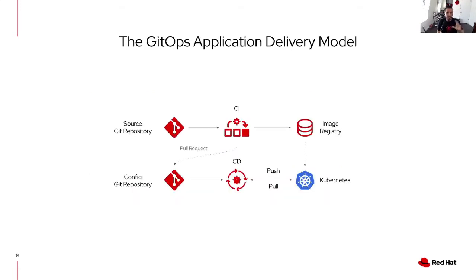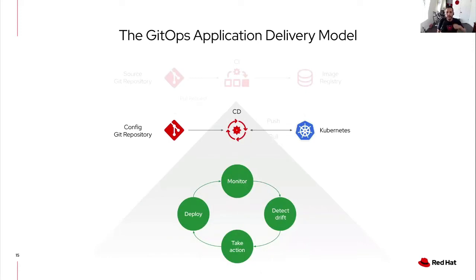The GitOps application delivery model is familiar if you're already doing things in Kubernetes with pipelines. You have your CI process that builds an image and changes some config, then pushes or pulls it to Kubernetes. The power in GitOps is the CD part — instead of an event-driven model, it leverages Kubernetes' always-running control loop concept, moved up to the application level. Something is always monitoring, detecting drift, and taking action to reconcile and deploy an application if needed.